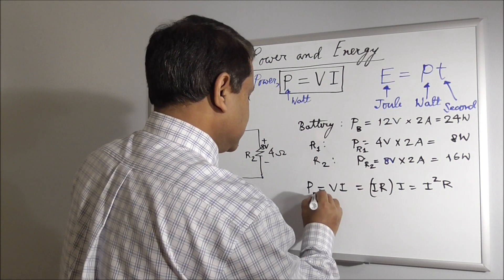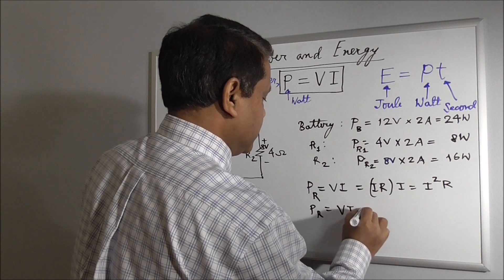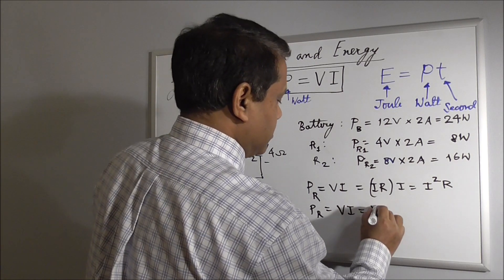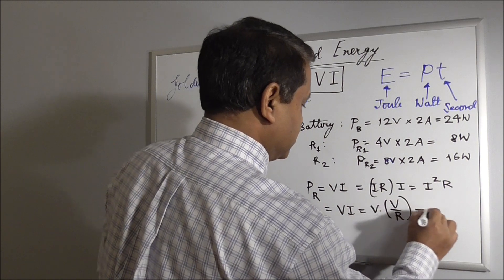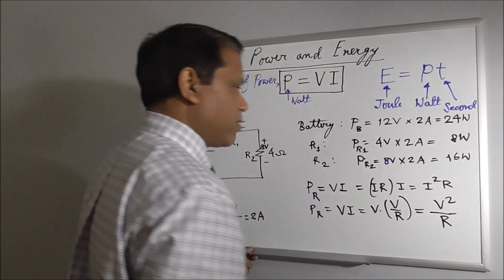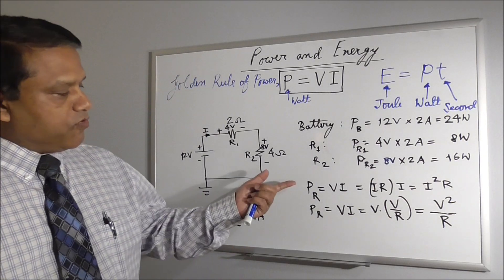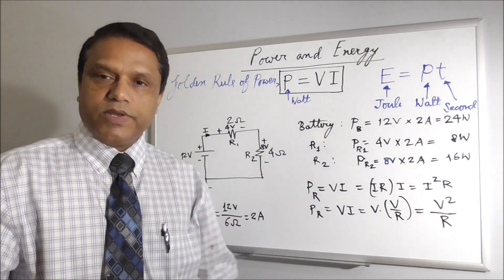And there is also another form for resistance. VI, V is V, and I equals V over R. So that gives you V squared over R. So only for resistors, you can use this formula I squared R, or V squared over R.